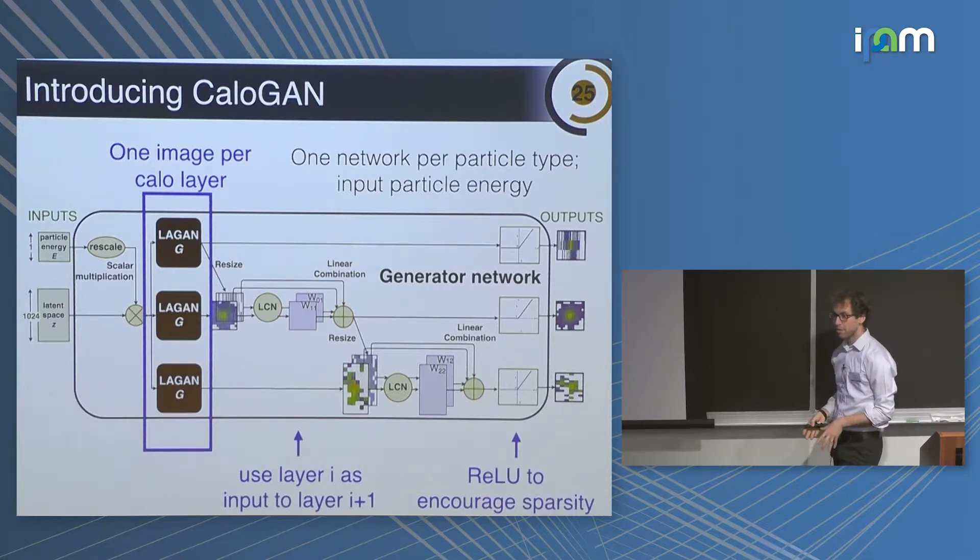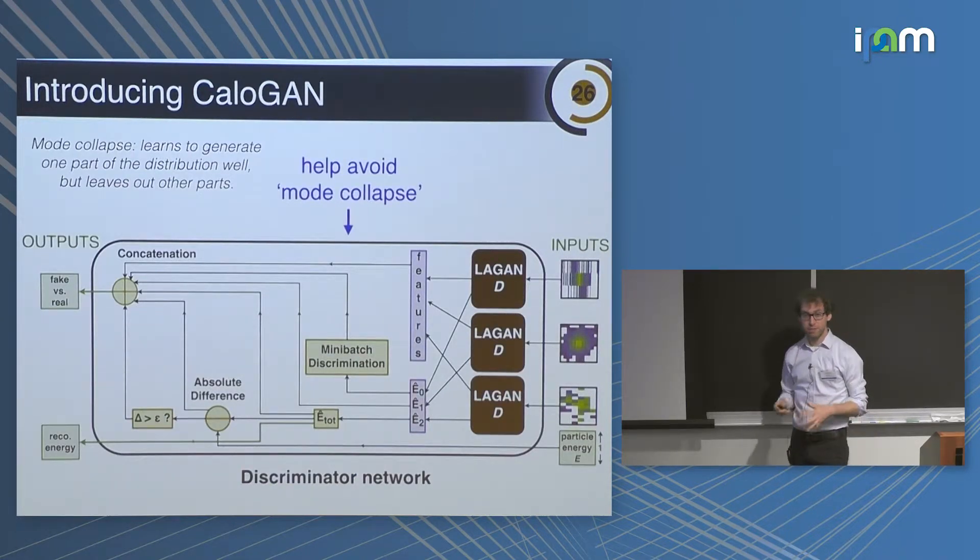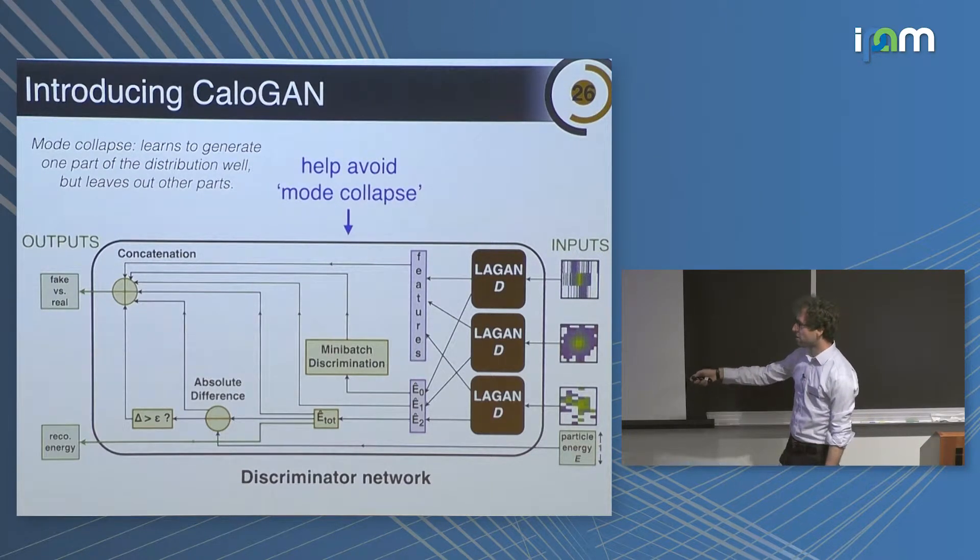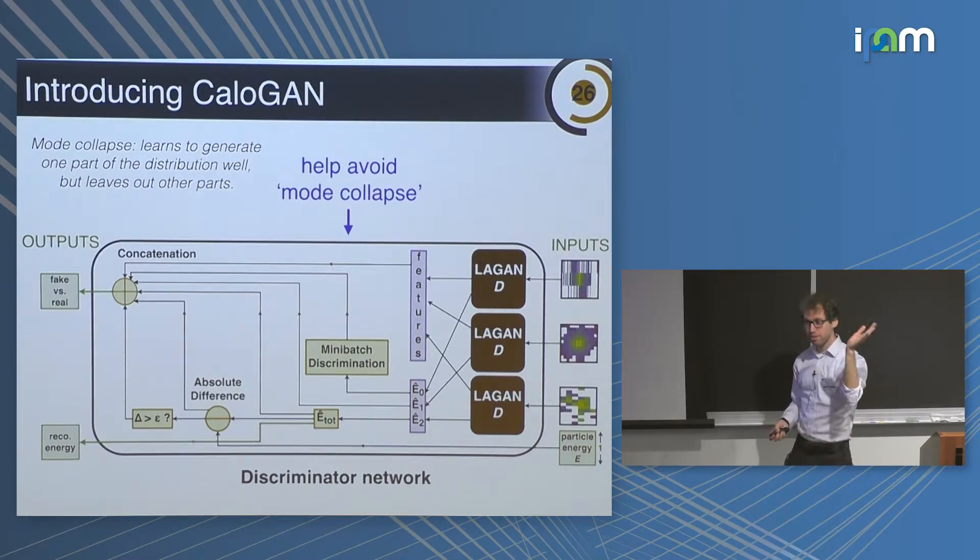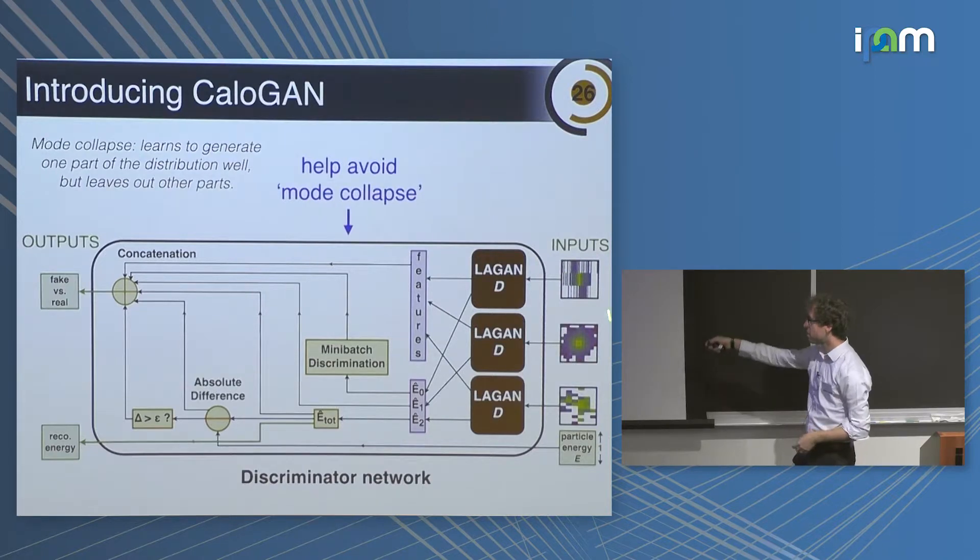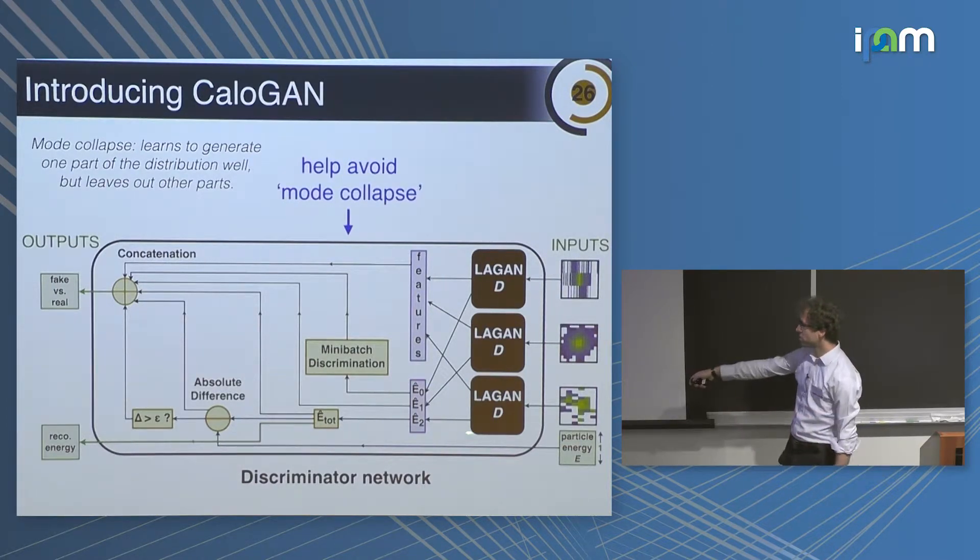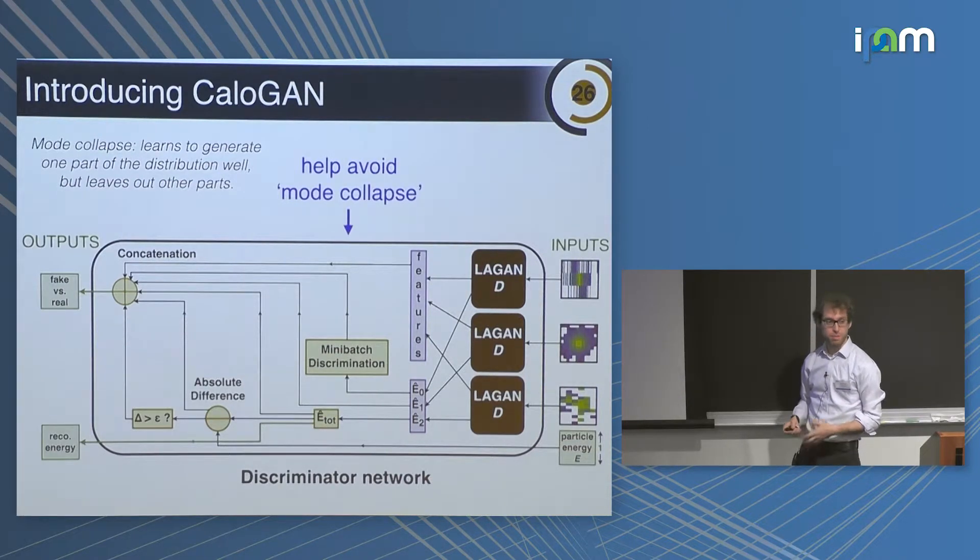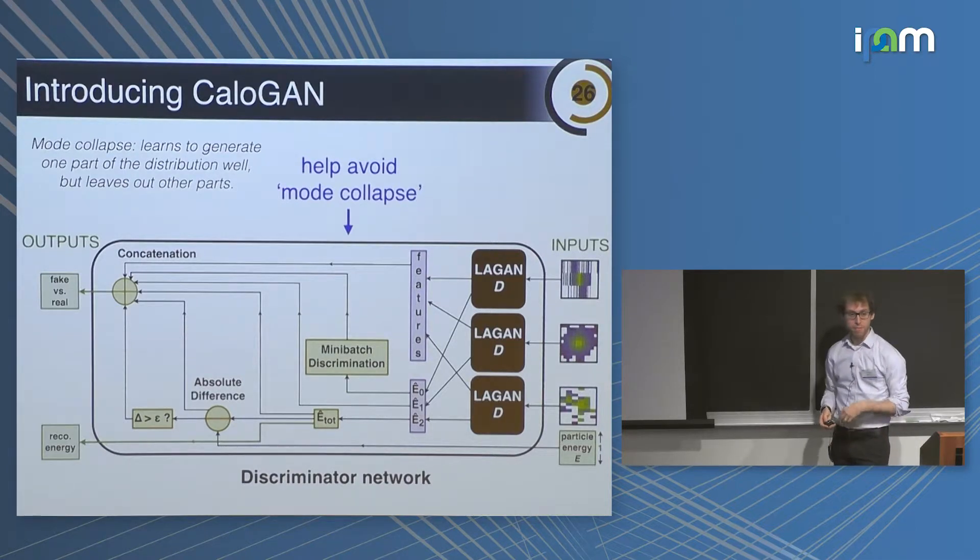On the other side, you have a discriminator. The discriminator is a very similar structure, just backwards. The discriminator takes as input three images and outputs is it real or fake. It takes the input of the images as well as the particle energy. The first thing it does is it computes what is the energy of the three images. As part of the loss function, it has some constraint that wants this energy to be as close as possible to the input energy, so that energy is conserved. We have mini-batch discrimination which allows some regularization to help prevent mode collapse.